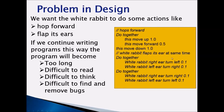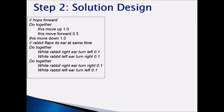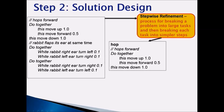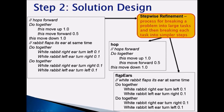It will become difficult to find and remove bugs. The solution to this design is to do a step-wise refinement. Step-wise refinement is the process of breaking a problem into larger tasks and then breaking each task into simpler steps. We take all the large tasks and break them into two parts: one called hop — with simpler steps written for hop — and one called flap ears, broken down into much simpler steps.